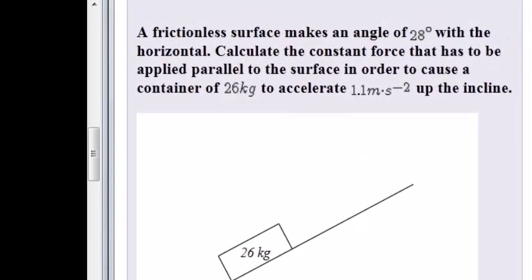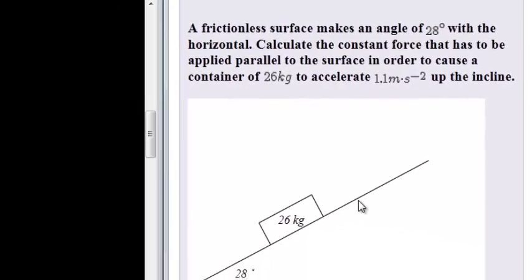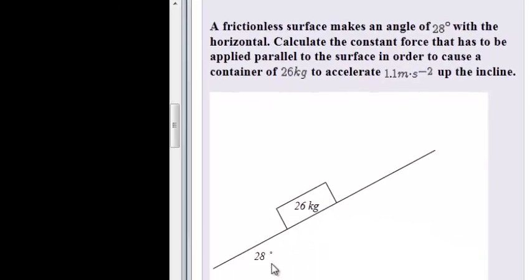A frictionless surface makes an angle of 28 degrees with horizontal. There's our surface, frictionless and making an angle of 28 degrees. Calculate the constant force that has to be applied to the surface in order to cause a container of 26 kilograms to accelerate 1.1 meters per second up the incline. Something is forcing this thing up the incline, accelerating at 1.1 meters per second.